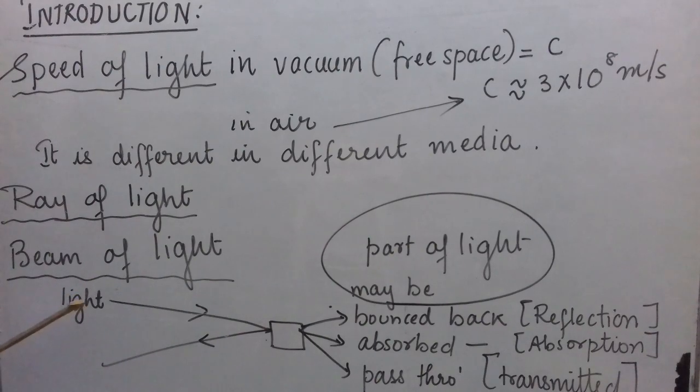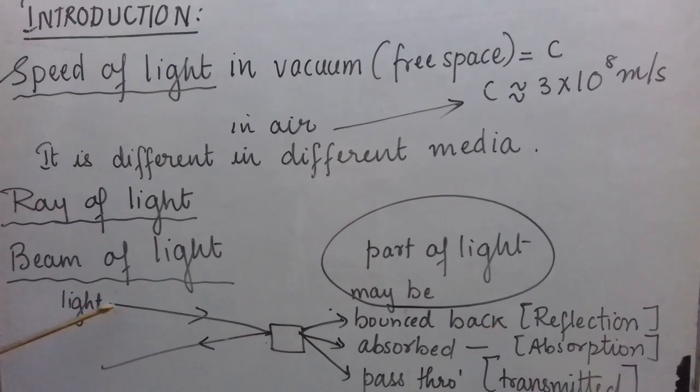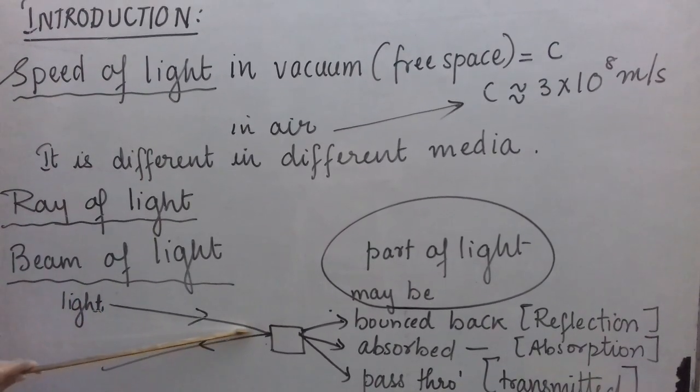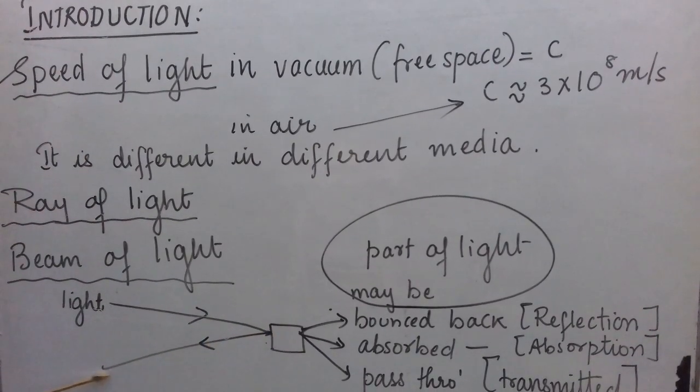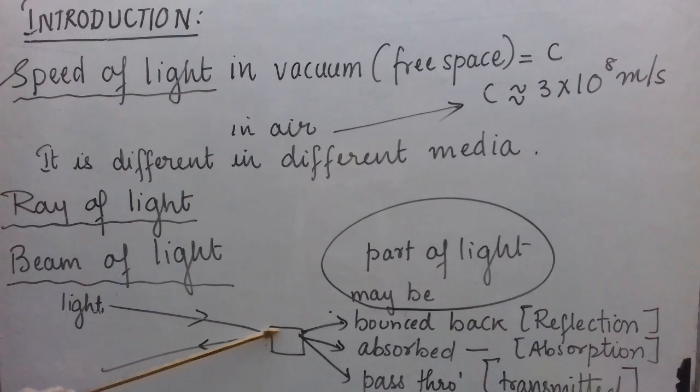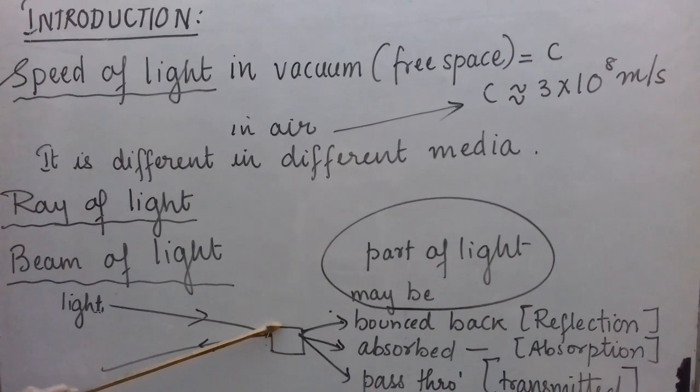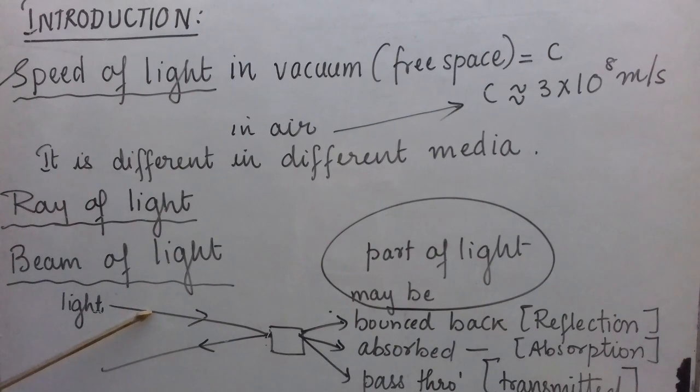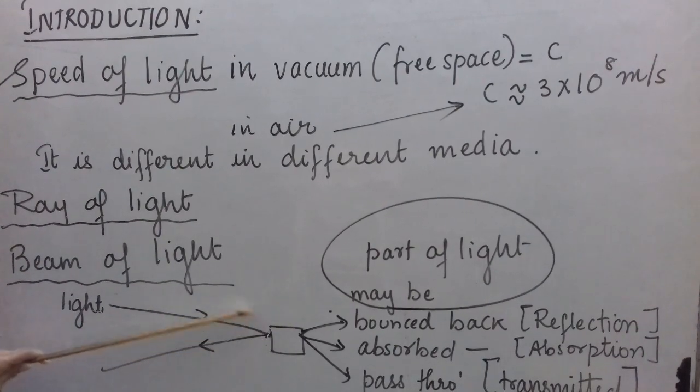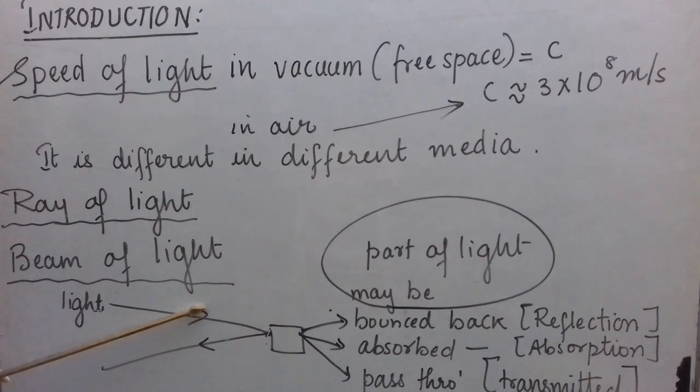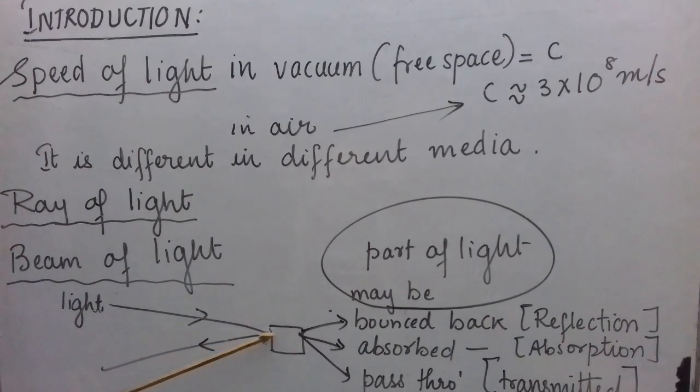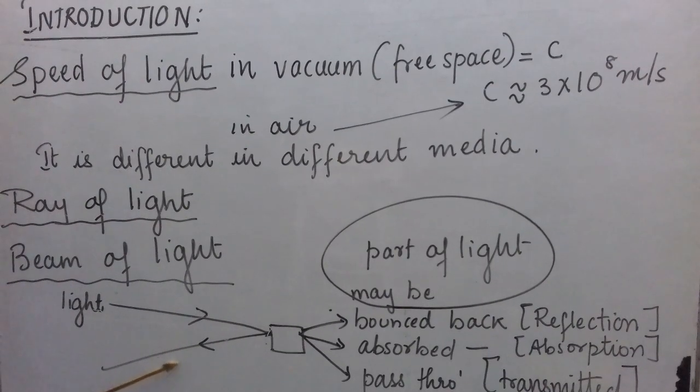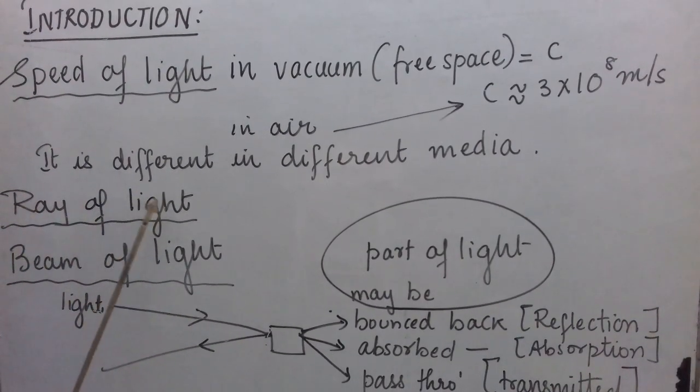Now, suppose if here in this figure, see a ray of light is falling on this object, and this ray of light is bouncing back. Just like the ball bounces back from the wall or from the ground. So, this ray of light which is falling on the object is called an incident ray of light and the ray of light which bounces back is called reflected ray of light. So, you know what is a ray of light.